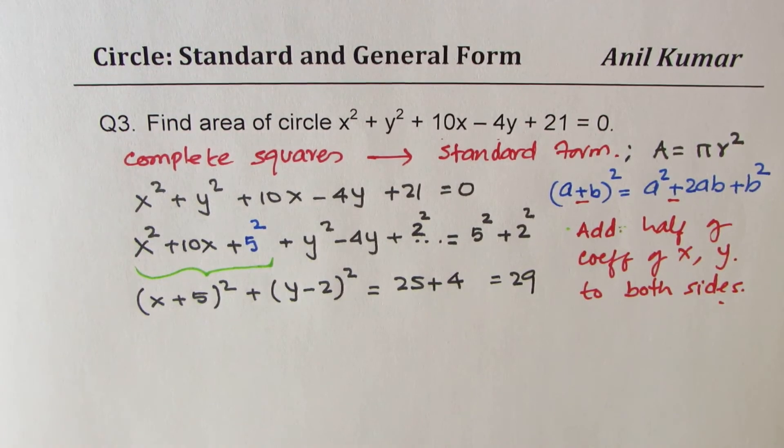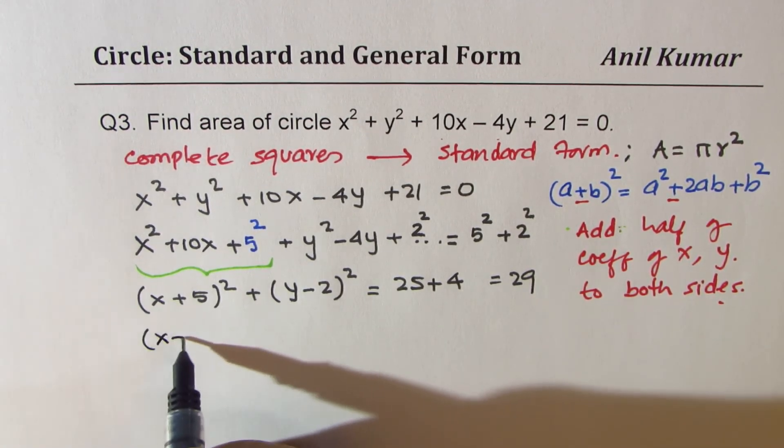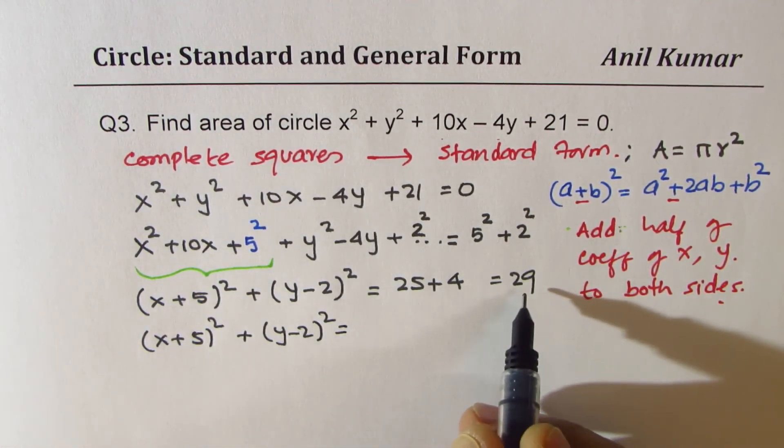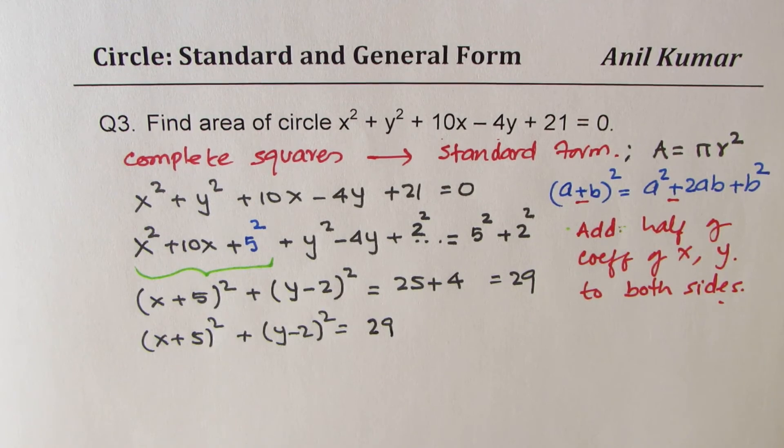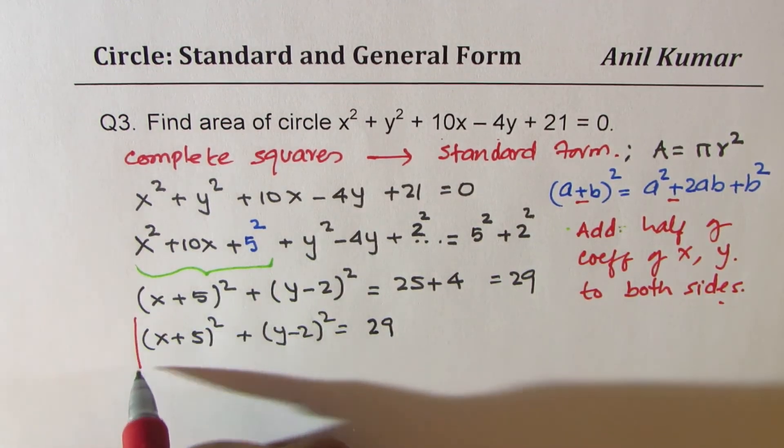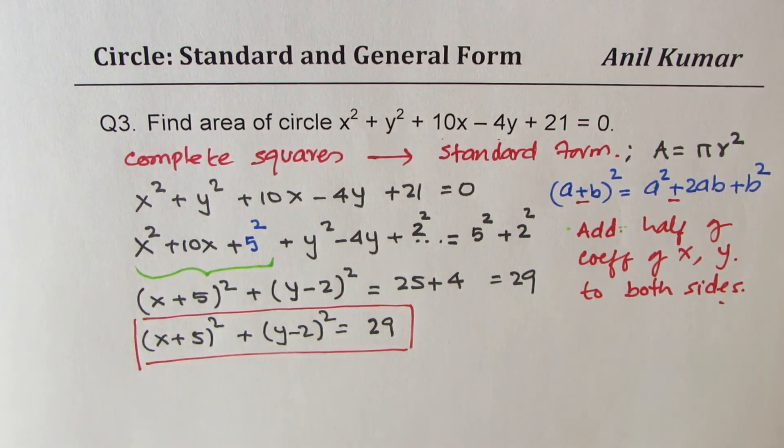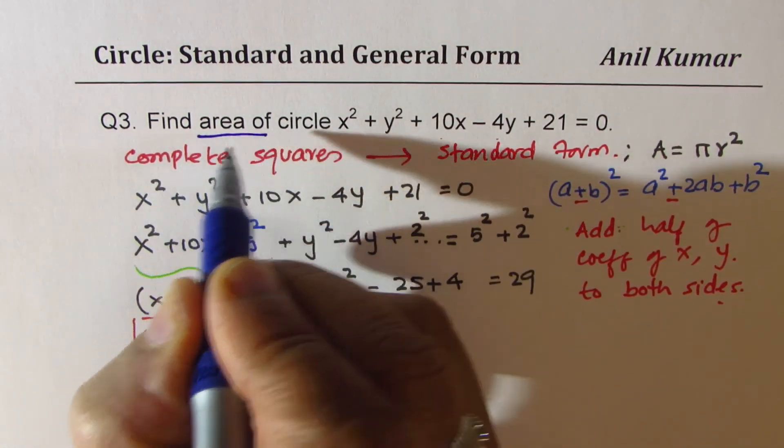So that becomes equation of a circle. Now from here, from this equation, let me rewrite this: (x + 5)² + (y - 2)² = 29. So that is the equation of circle in standard form. So what you learned just now is steps to write equation from general to standard form. But what we need to find is the area of the circle. We need to find area of the circle. So let's get back to the question.